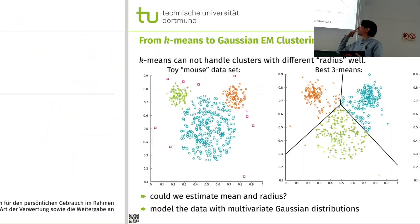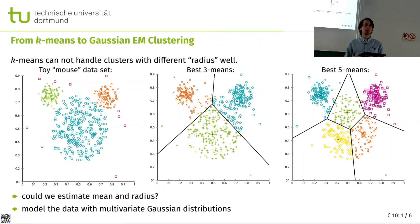So we have these two results, same slide as before from the pictures, slightly different text. We want to find a better result. And the idea is, what if we not only model the mean, but also a radius?